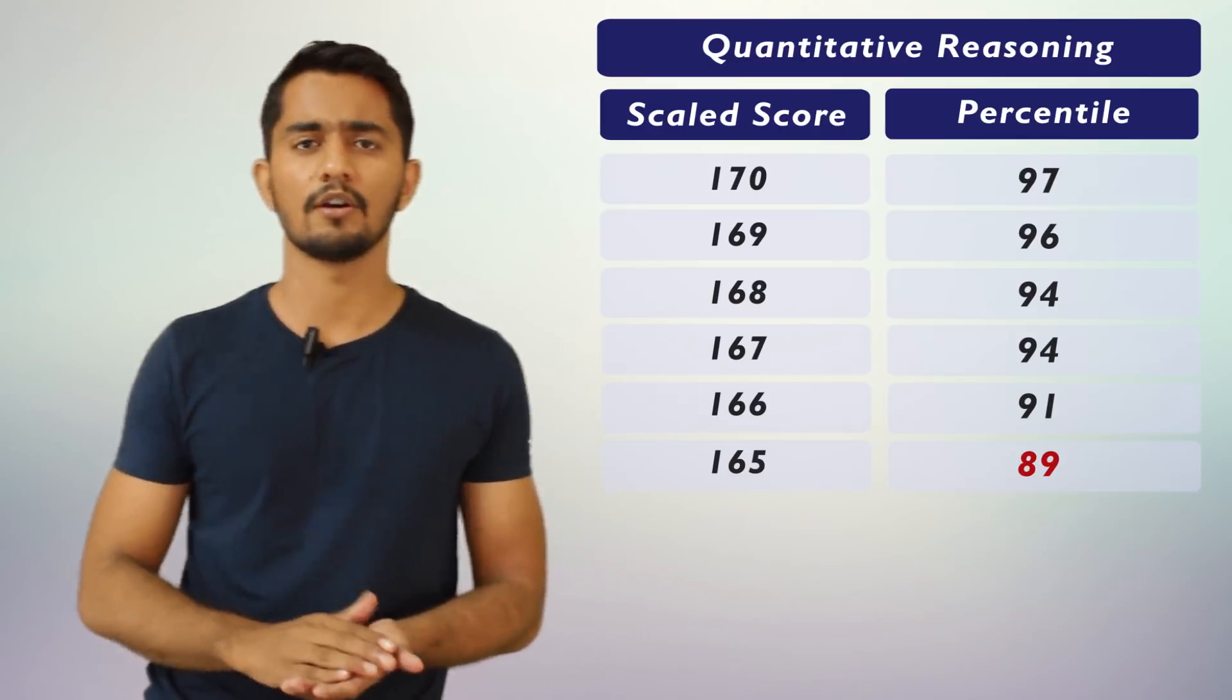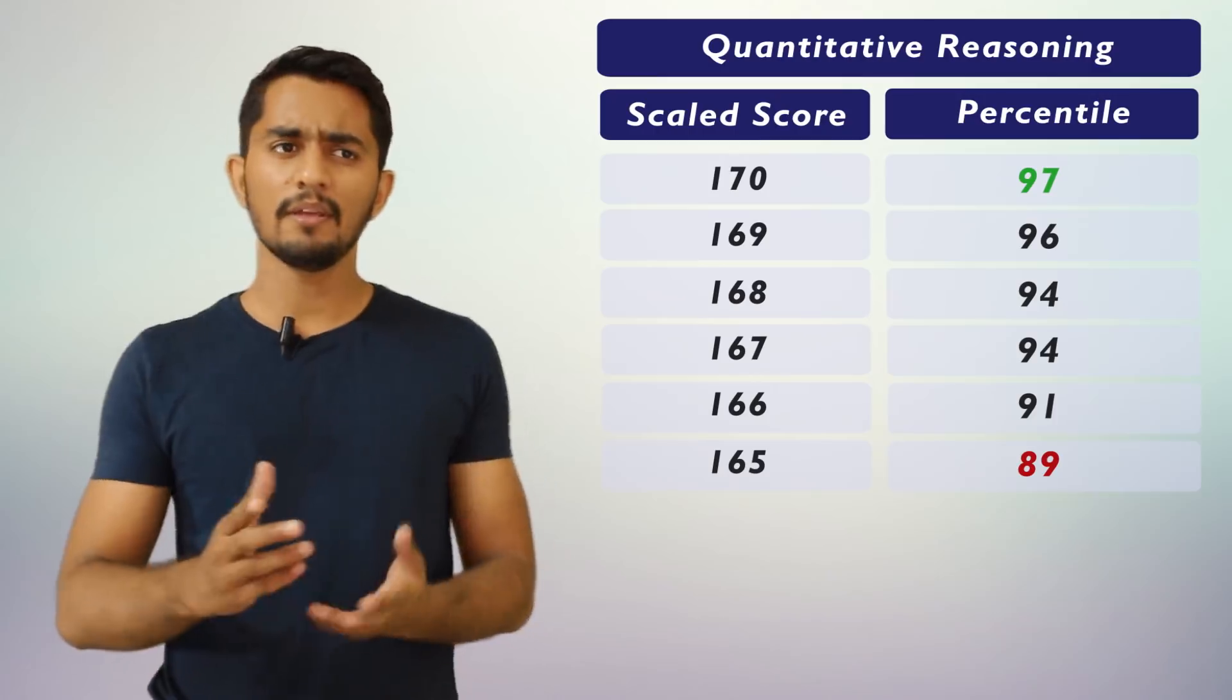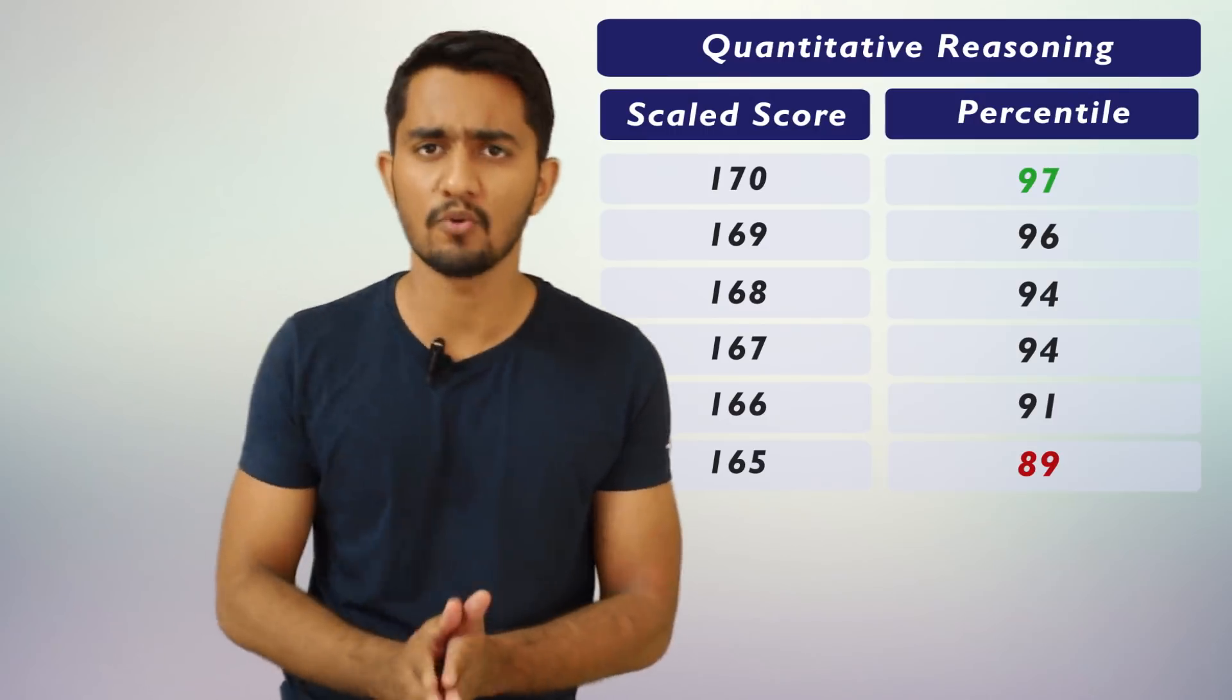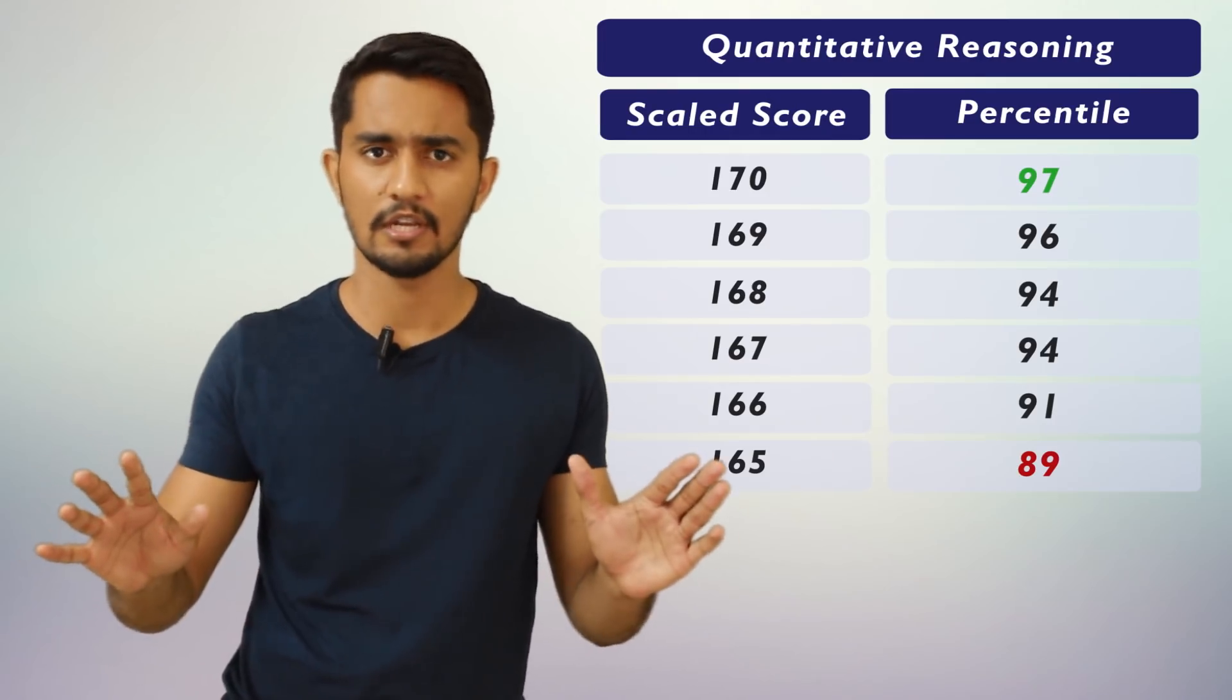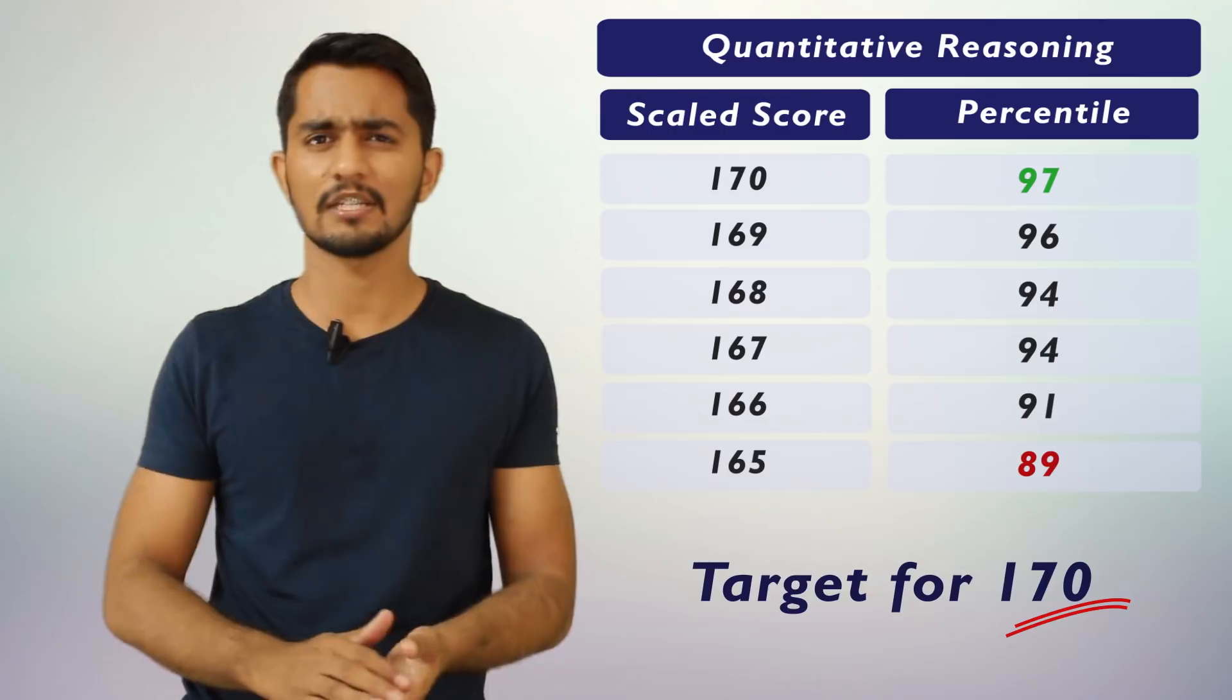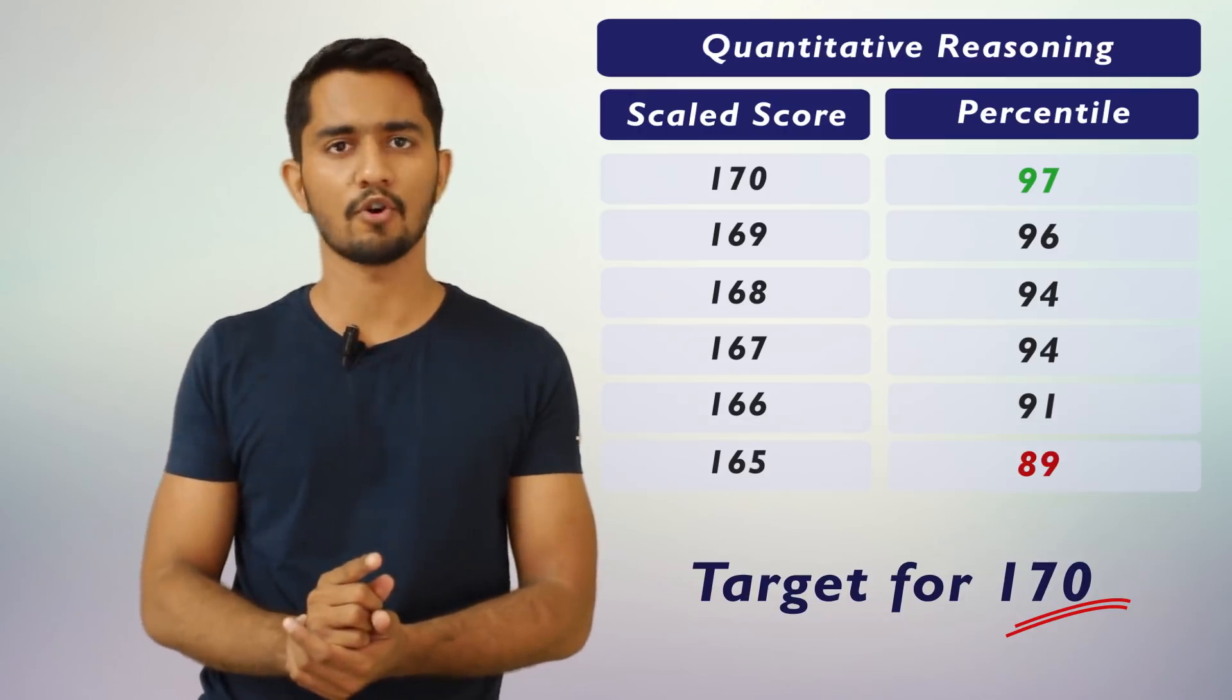A lot of test takers all over the world take GRE and 1% consists of a huge lot of students. Someone who has a percentile of 94 or 97 would definitely have a good chance of securing admission at the college you're applying to. Maybe the difference is not more, just 165 and 170, only 5 points, but the difference in percentile is huge. Your one wrong question will cost you severely.